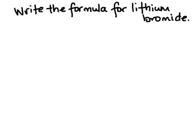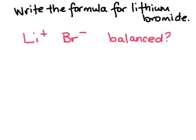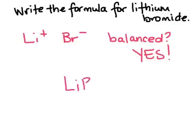Pause the video and try writing the formula for lithium bromide yourself, then come back and check your answer. Hopefully you found on the periodic table that lithium (Li) has a charge of plus one and bromine (Br) has a charge of negative one. Is it balanced? Yes — plus one balances with negative one. The chemical formula for lithium bromide is simply LiBr with no subscripts. Remember that these represent one of each, but we don't write ones in chemistry — we only write subscripts of two and above.